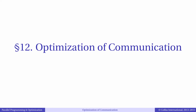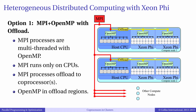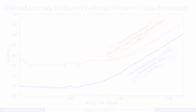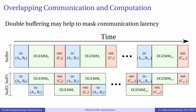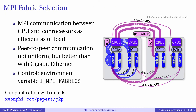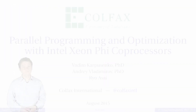Fifth, communication. If an application works in offload mode or uses more than one coprocessor or more than one compute node, you must control the efficiency of data movement between the host system or systems and coprocessors. It may be possible to reduce communication overhead by overlapping communication with computation, optimizing data marshalling policies, and relying on high-performance communication fabrics.